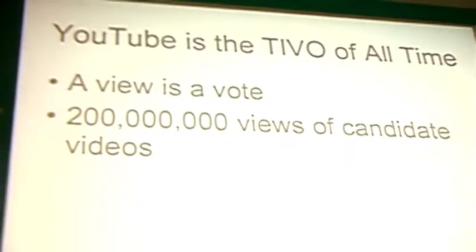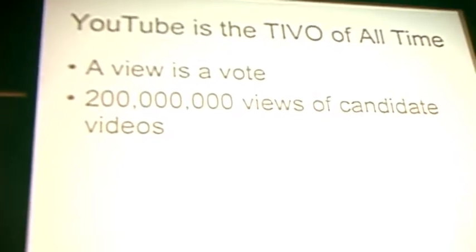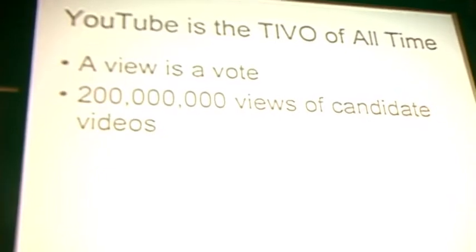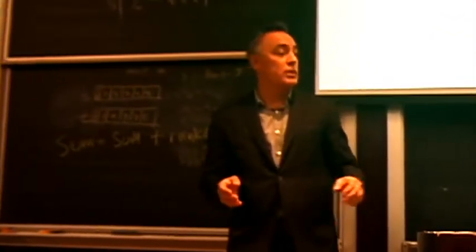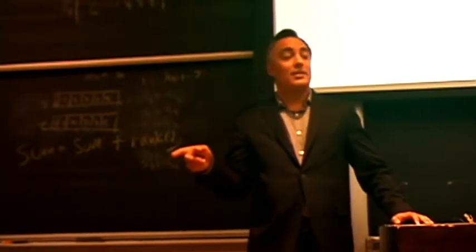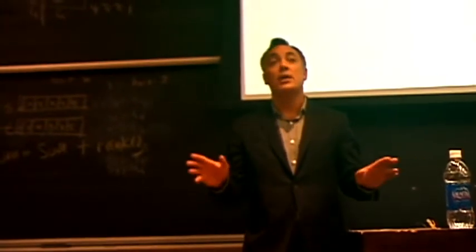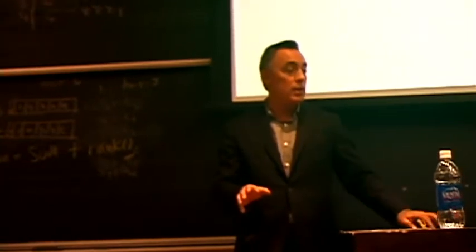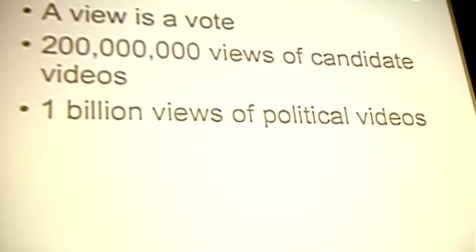A view is a vote. We estimated on Tech President that there have been something in the area of 200 million views of candidate videos this election cycle alone. Barack Obama's videos on YouTube were about 85 to 90 million views. John McCain was about 25. If you add in all the other candidates and the parties, the senators, the congressmen, we think it's 200 million. But then if you count all the yes-we-cans and the no-we-cants and the tens of thousands of voter-generated videos that you've never seen but got seen by someone's 50 or 100 friends, we're talking about over a billion views of political videos this cycle alone. It's massive.